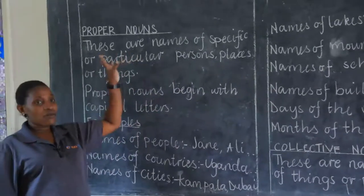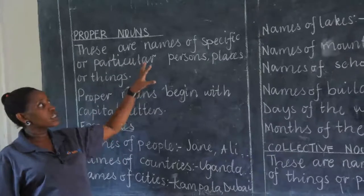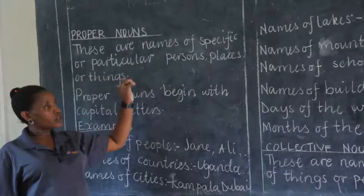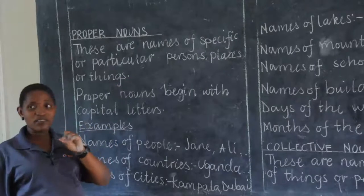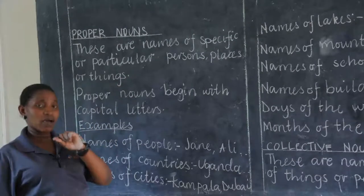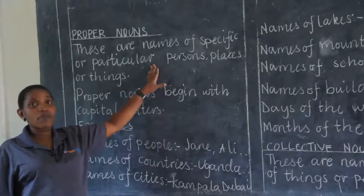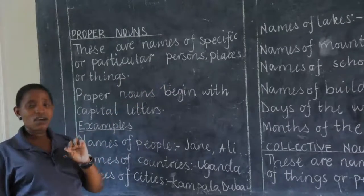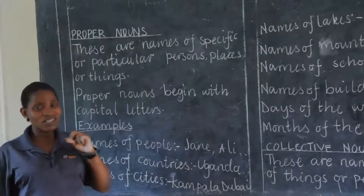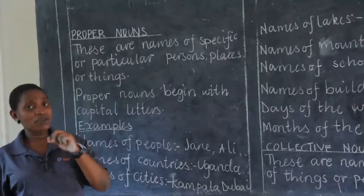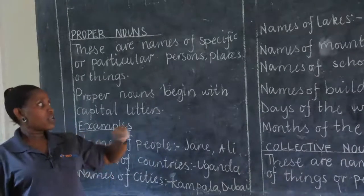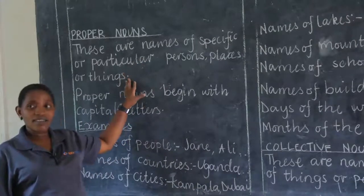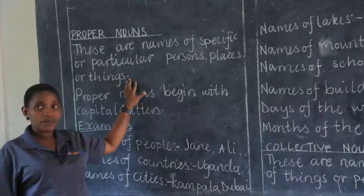These ones come from the common but become particular. When you're talking about a person and you want to be specific about which person you are talking about, that's when you bring in the proper noun. When you're talking about a place and you want to be sure which exact place you are talking about, that's when we use proper nouns, even for other things to be particular.